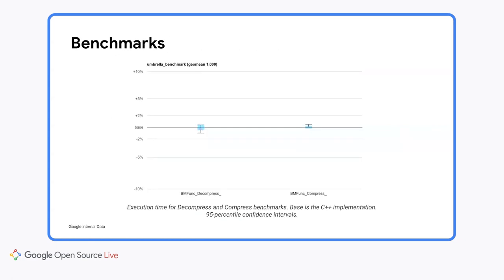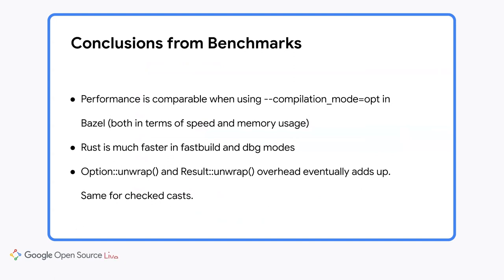The conclusions from benchmarks are that performance is comparable when using compilation mode opt in Bazel, both in terms of speed and memory usage. Rust is much faster in fast-build and debug modes than C++ for the decompression benchmark: 85% faster in fast-build and 32% in debug mode. We currently don't know whether Rust has different effective optimizations enabled in LLVM for fast-build and debug modes, which would explain the huge performance difference.